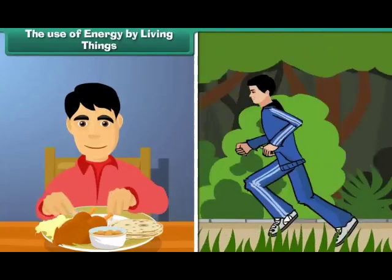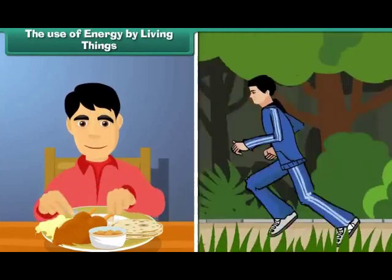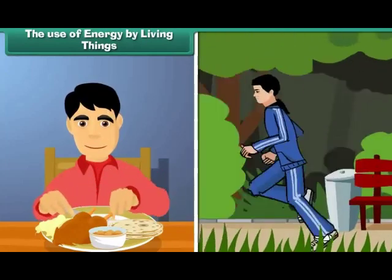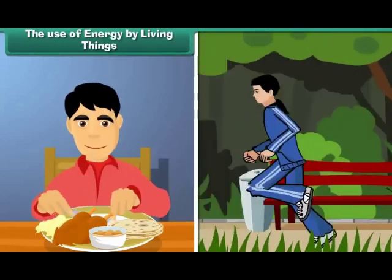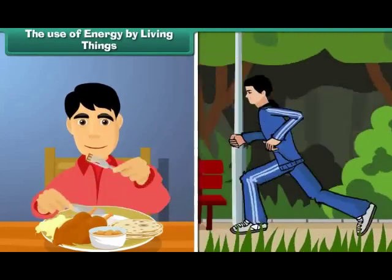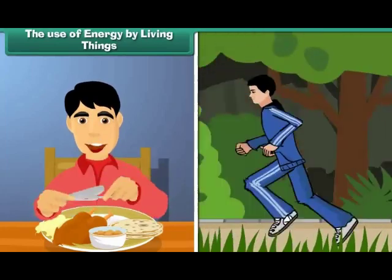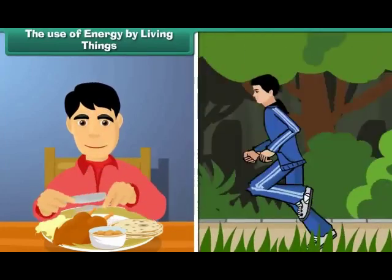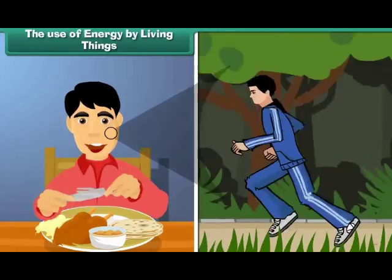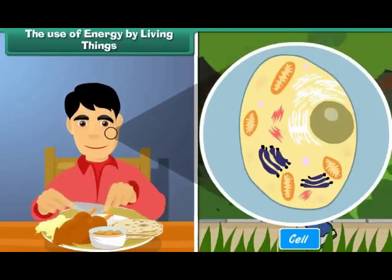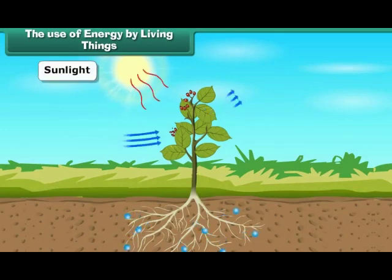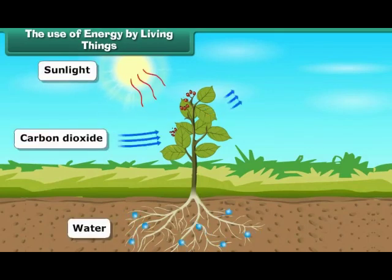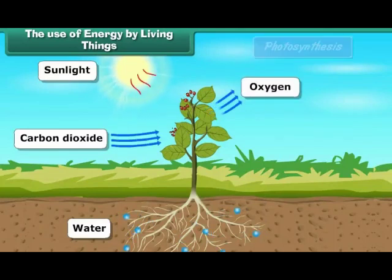Living beings constantly require energy not only to perform various activities of the body, but also to overcome entropy — the degree of disorder in a system or tendency to randomness. The source of energy is food, required by every cell of the body. Food is prepared by plants through the process of photosynthesis, which requires sunlight, carbon dioxide, water and chlorophyll.